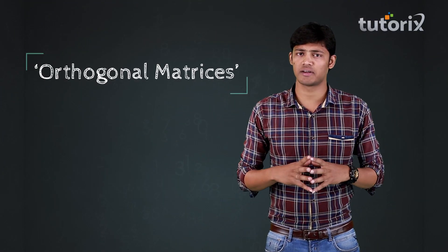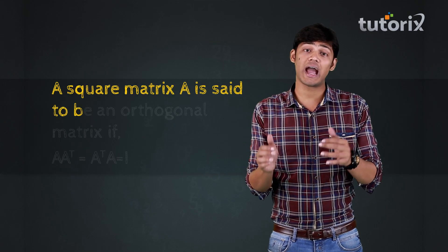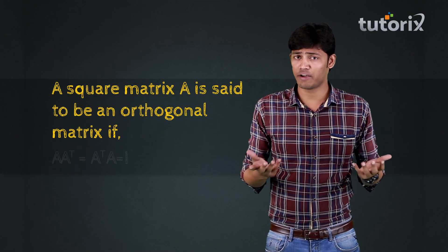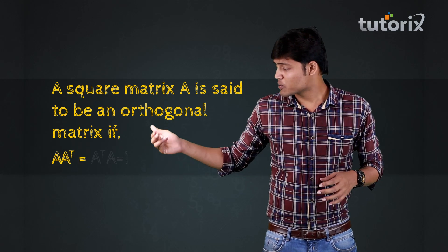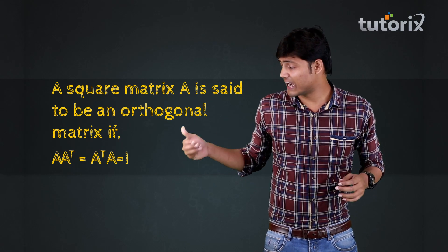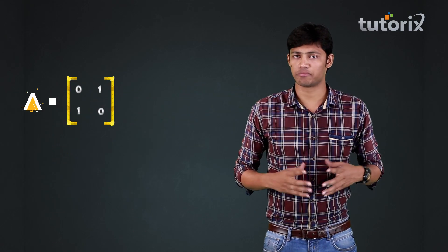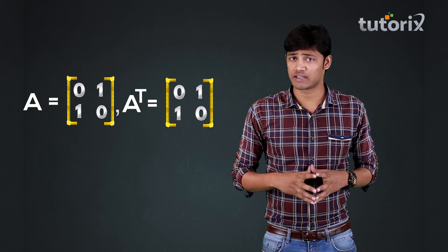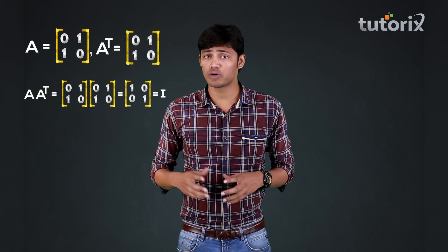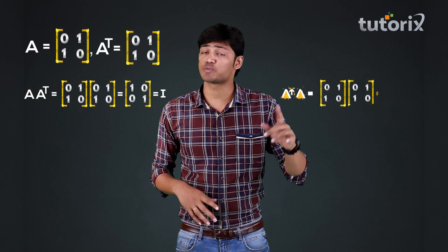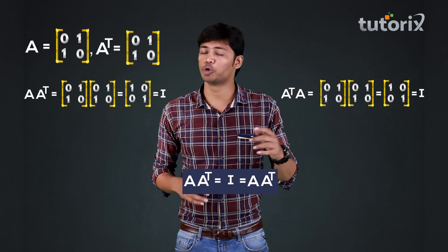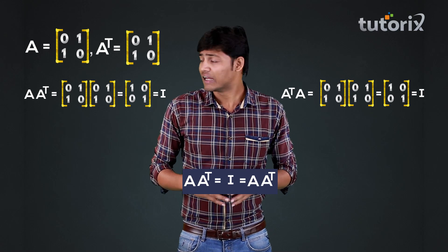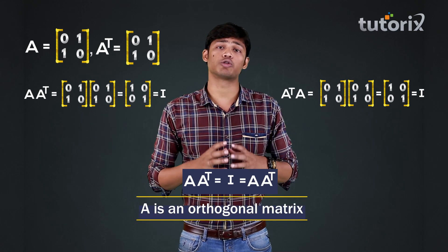Before we conclude, let us define an orthogonal matrix. A square matrix A is said to be an orthogonal matrix if the product A into A transpose is equal to A transpose into A, and it is also equal to the identity matrix. For example, in this matrix A, we can clearly see that A into A transpose is equal to A transpose into A, and it is also equal to the identity matrix of the order 2 by 2. So therefore we can conclude that this matrix A is an orthogonal matrix.